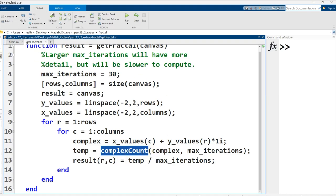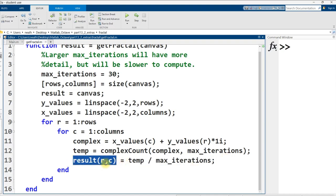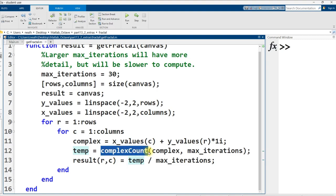Loop across the row indexes, loop across the column indexes, and then generate a complex number. The real part is from the x vector. The imaginary part is from the y vector multiplied by the imaginary number. And then pass that complex number and the maximum number of iterations, in this case 30, to this new function called complexCount. It's going to return some number between 1 and max iterations showing how many iterations it took for the number to get beyond distance 2. We'll take that value, divide it by 30, so now we've got a number between 0 and 1, and put that into our result matrix.